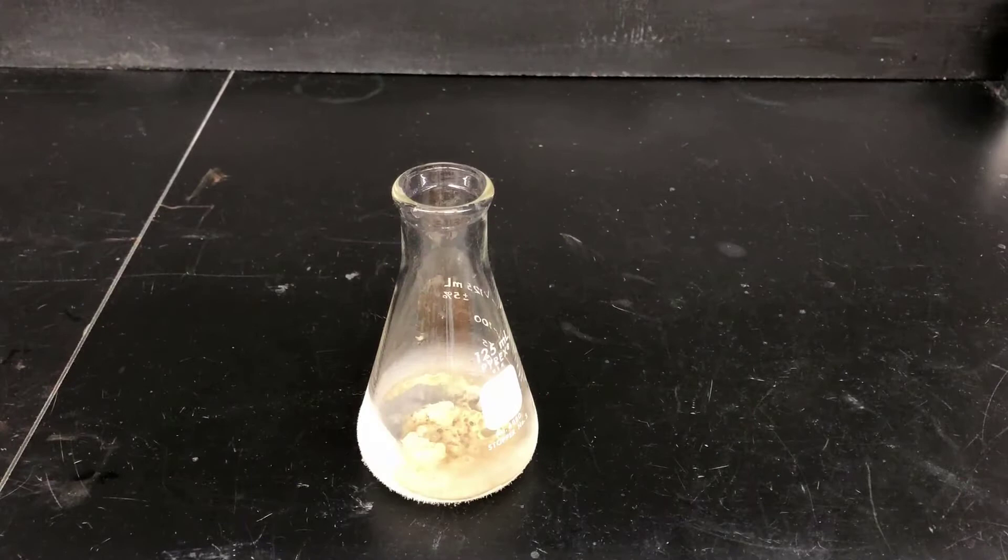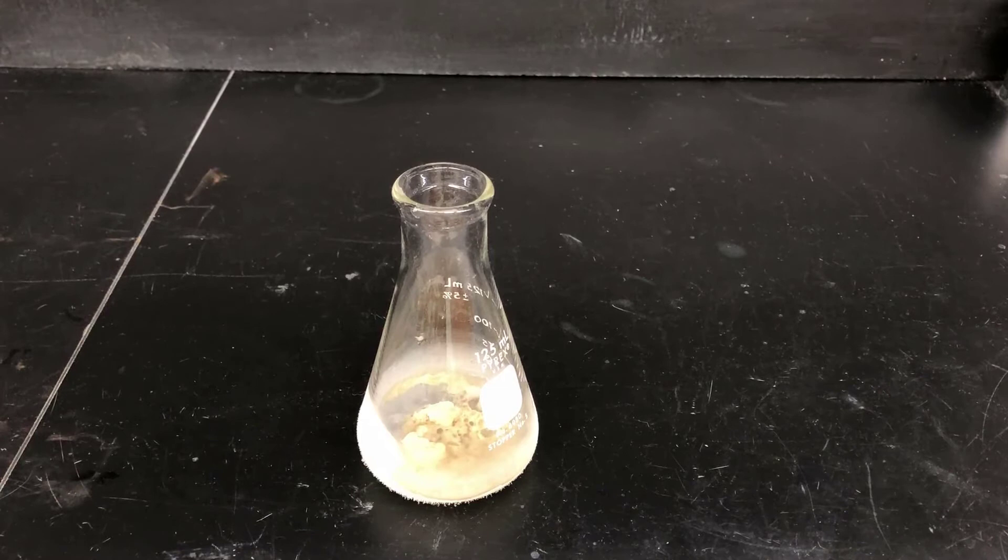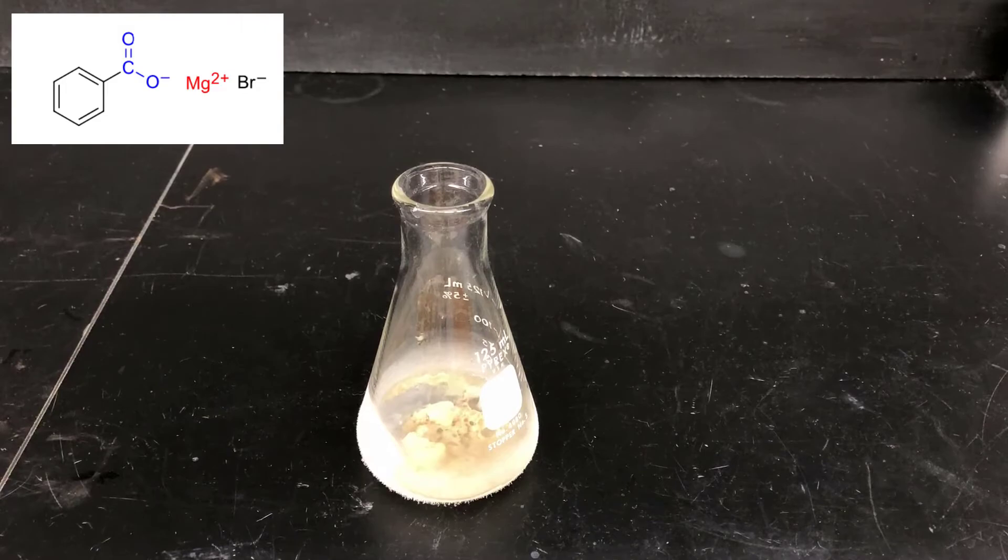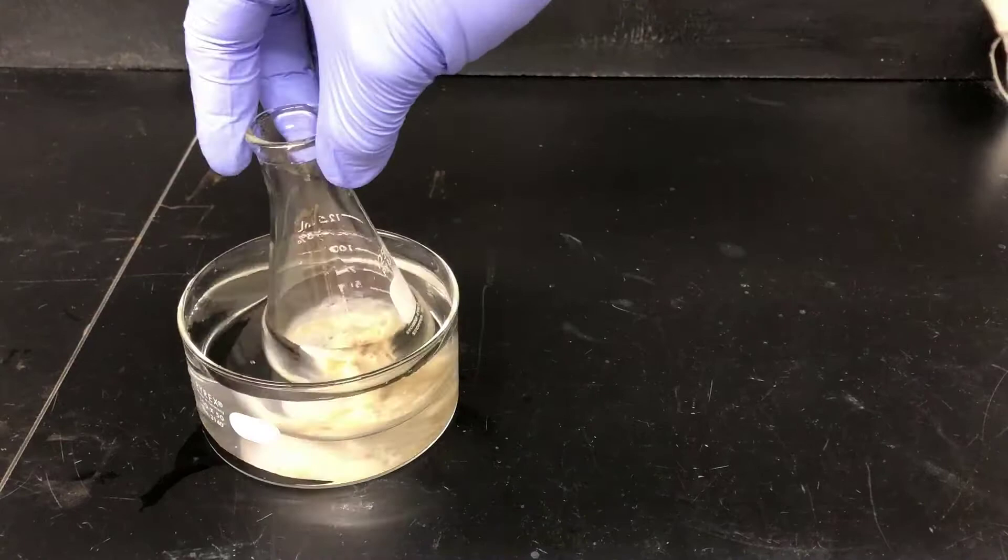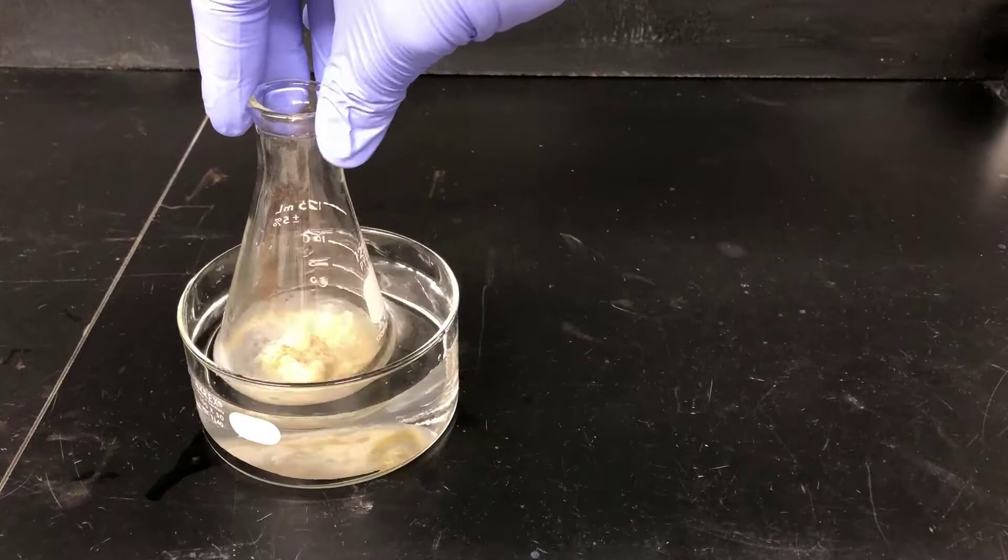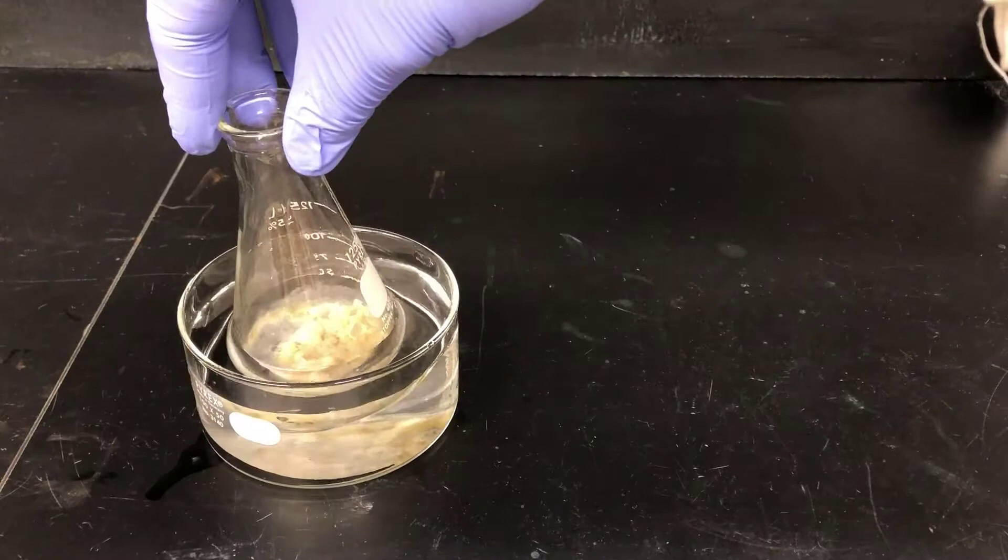At this point, the Grignard reaction is over. The Grignard reagent, phenylmagnesium bromide, has reacted with CO2 to give a benzoate carboxylate salt. Now the reaction mixture is still really cold, and there's still a lot of residual carbon dioxide. I'll take care of both problems by placing the reaction mixture in a room temperature water bath. This will warm up the reaction and accelerate the sublimation of CO2. Once the bubbling has stopped, I'll know I'm done with this step.